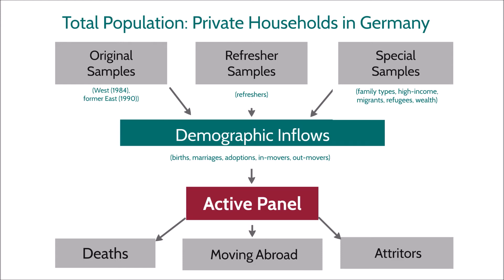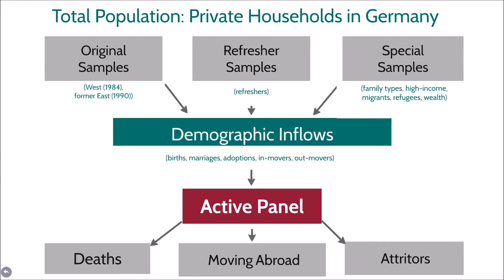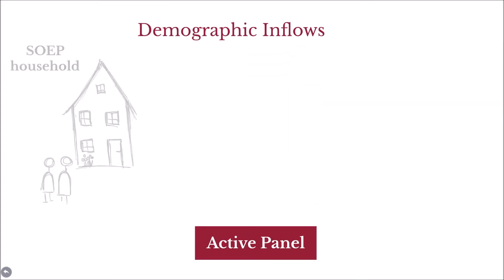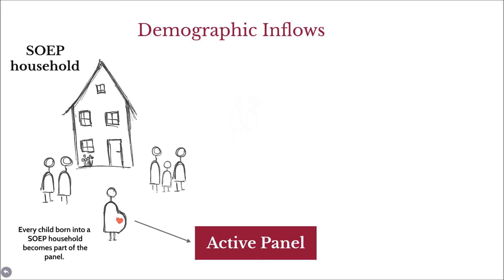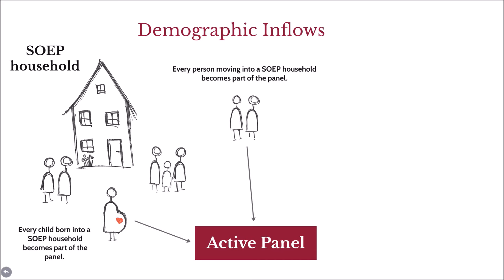Let's have a look at some of the demographic inflows into the active panel. Every child born into a SUP household automatically becomes part of the panel. Also, every person who moves into an established SUP household becomes part of the panel. An example of this might be an elderly parent who moves in with their child for care reasons, or new partners after a divorce.